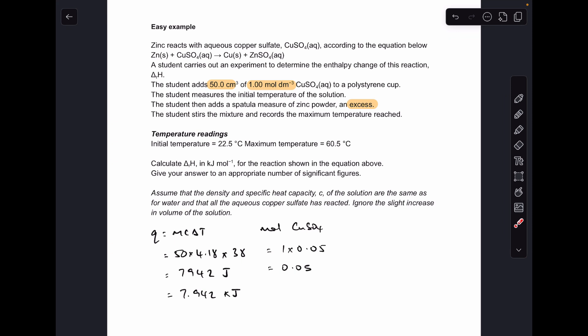Next thing we do is work out the moles of copper sulfate solution. And that's because the zinc is in excess. So the calculation is based on the moles of copper sulfate. Concentration times volume. Remember the volume needs to be in decimeters cubed. 0.05 moles.